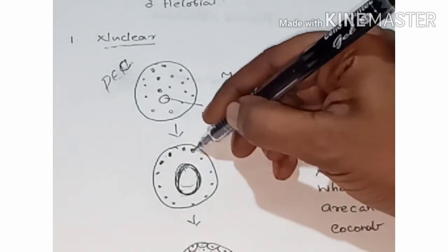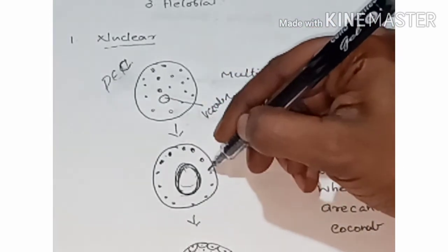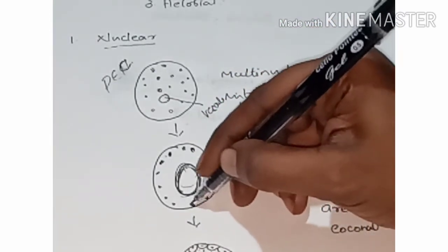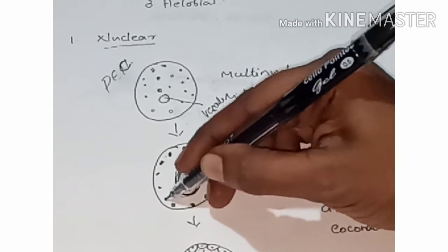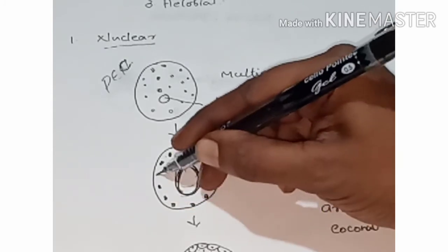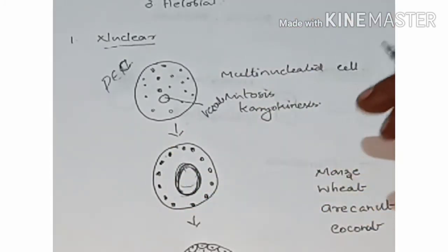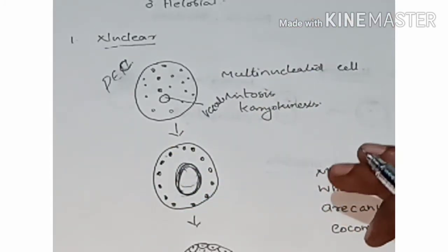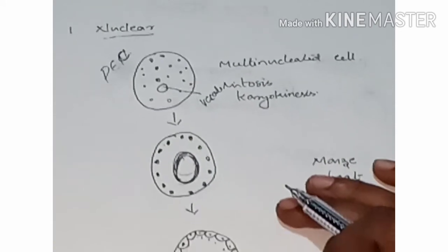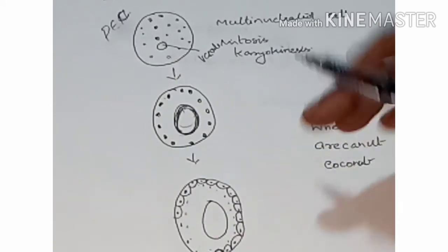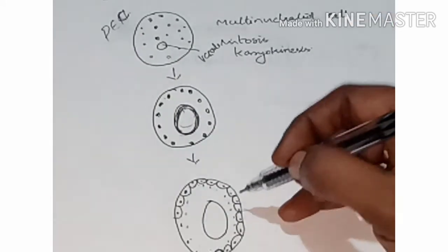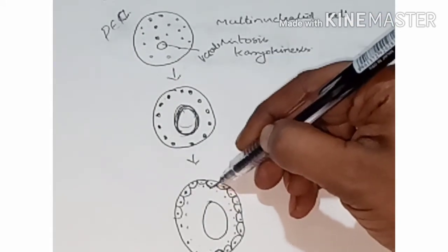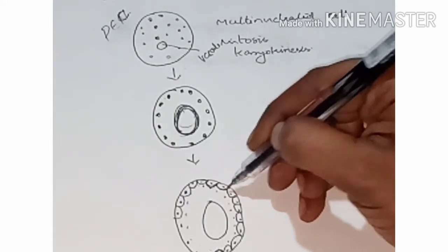The nuclei are arranged in the peripheral portion of the cell, forming the endosperm structure without intercellular spaces.